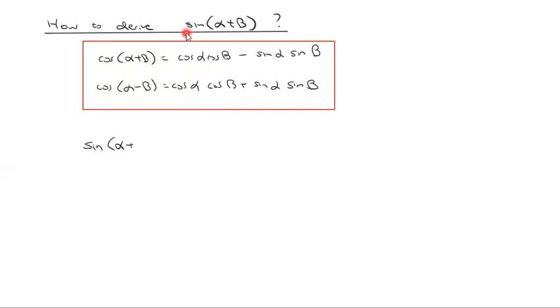We want to work out what sine of alpha plus beta is, but we have to think of it as a cosine. Consider how you might be able to change a sine into a cosine, or a cosine into a sine.